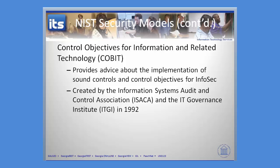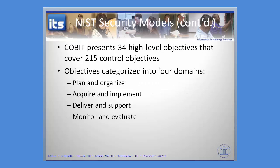Welcome back. We're now going to talk about COBIT, or Control Objectives for Information and Related Technology. This is another one of those models that's pretty popular out there in terms of putting controls into place for information security. It's pretty extensive — when you look at COBIT, what you're talking about is 34 high-level objectives covering 215 different control objectives.